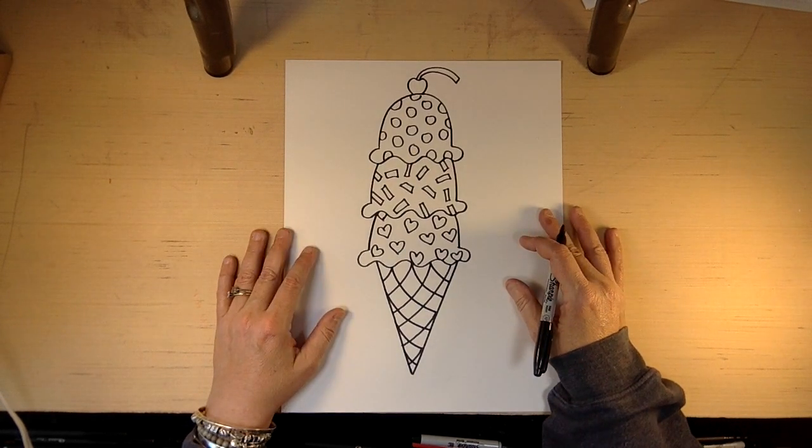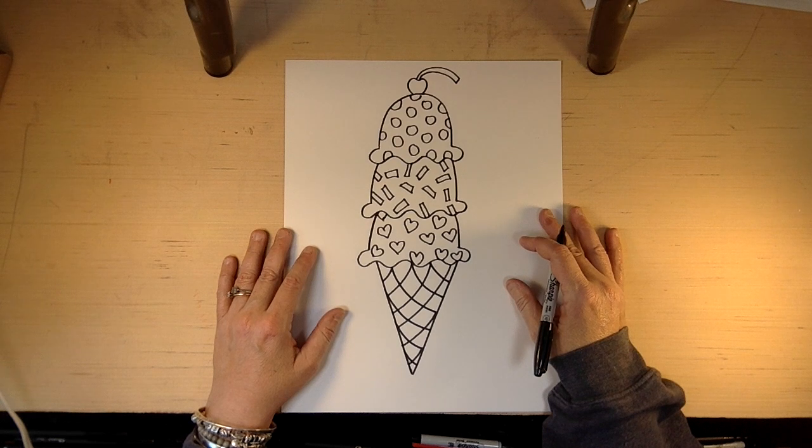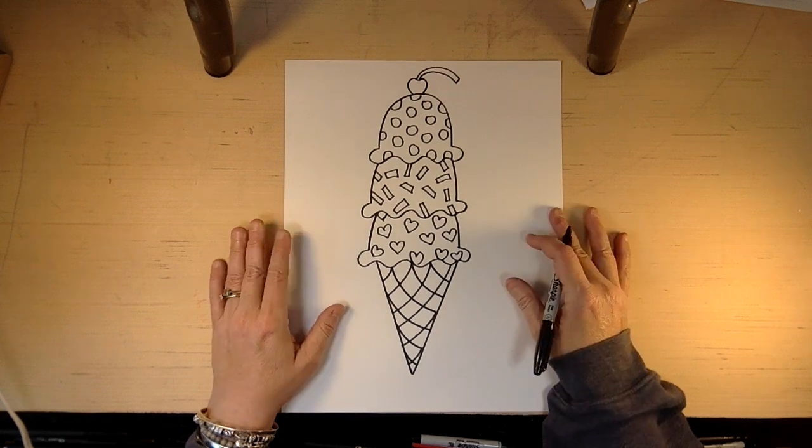And I do have a joke. Why do ice cream cones carry umbrellas? Because there's always a chance for sprinkles. Haha. That's so funny.